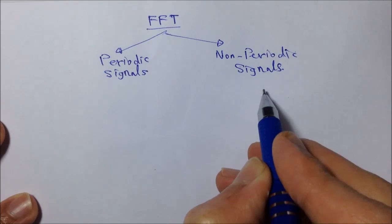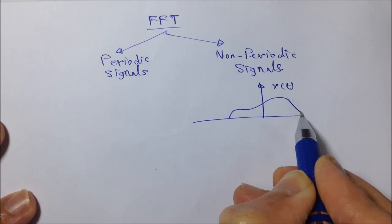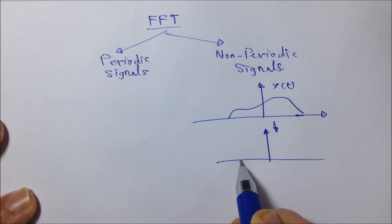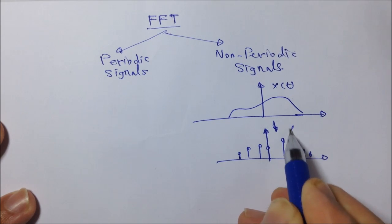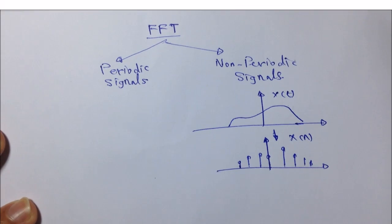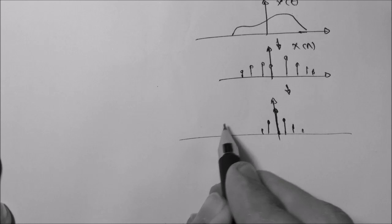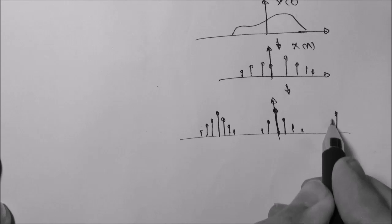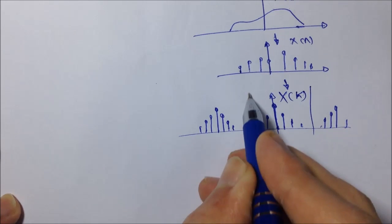The last thing to show in this video is how the FFT handles both non-periodic and periodic signals. For a non-periodic signal x of t, first you sample it — because the FFT only deals with discrete signals — giving x of n. The FFT will then give you a discrete periodic version of the original non-periodic continuous spectrum of x of t. So this is x of k given by the FFT, where k is the discrete frequency index.